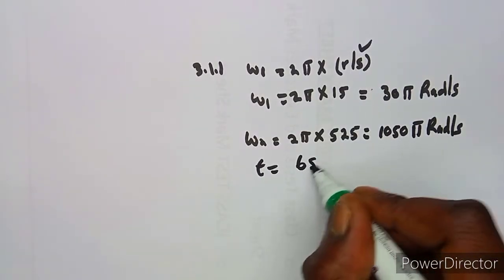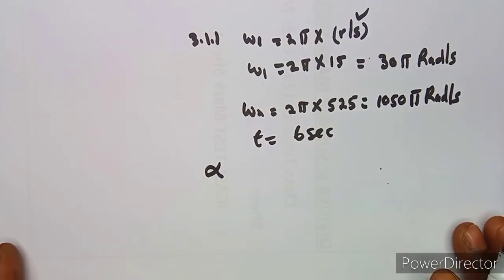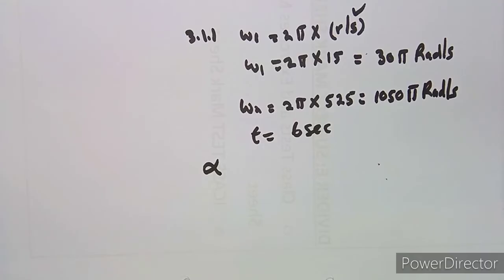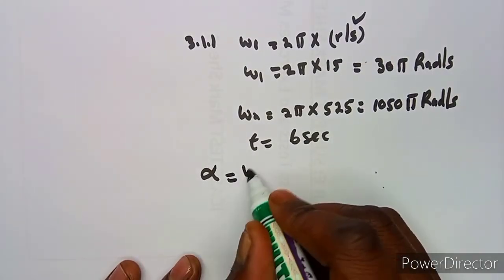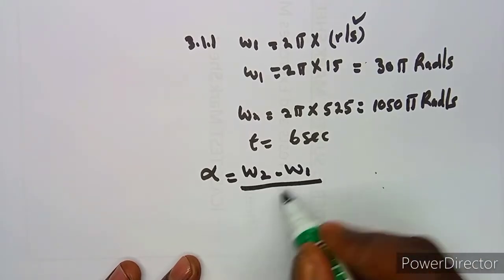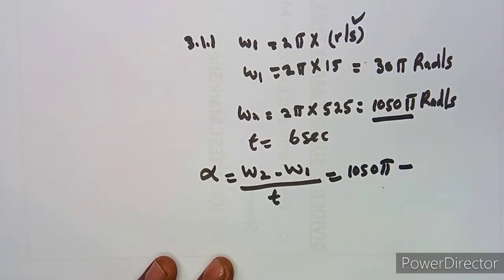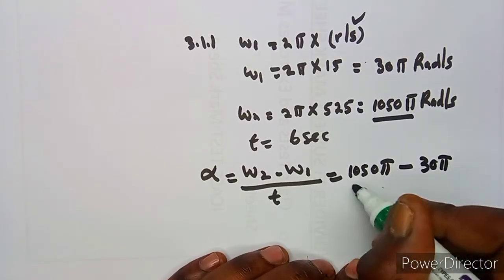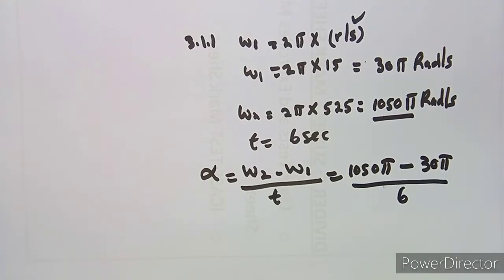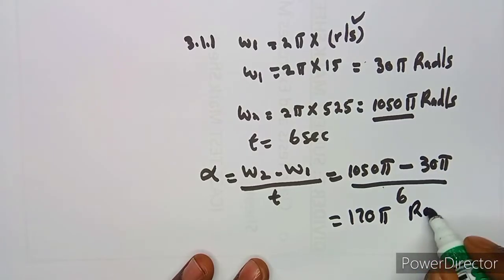To calculate the angular acceleration α, remember it is just the change in angular velocity over the time taken. So we subtract: α = (ω₂ − ω₁) / t. Substituting the values in radians — ω₂ is 1050π and ω₁ is 30π — you can use π form or decimal; it's one and the same thing.